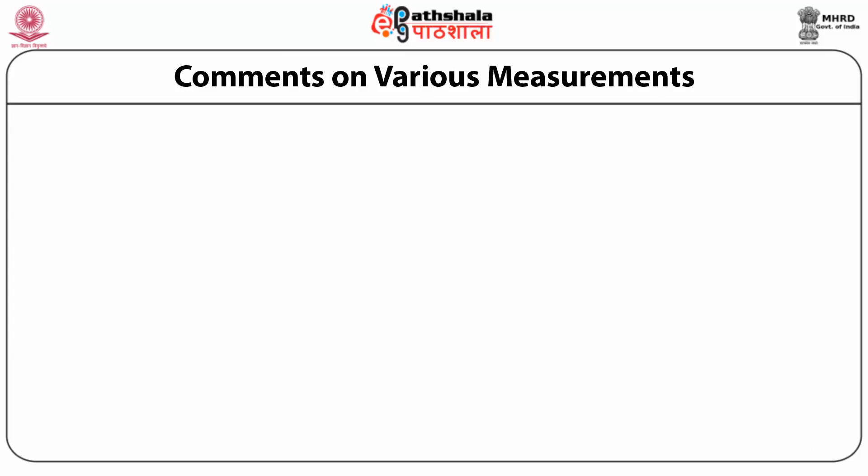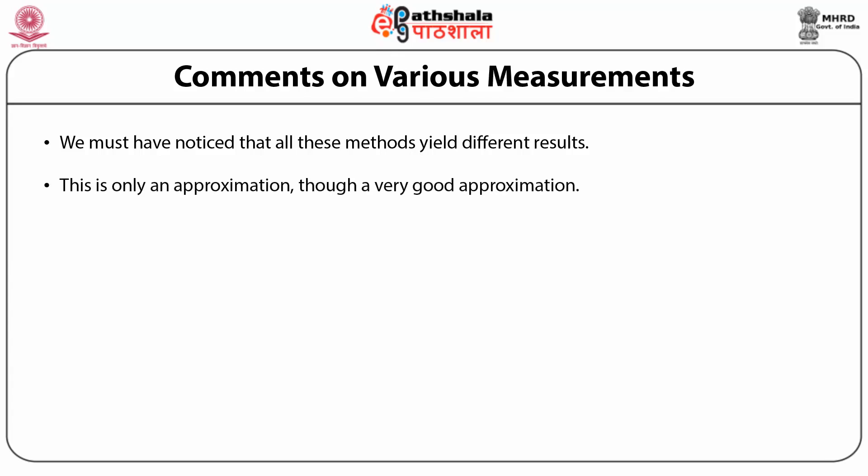Now let us comment on the various measurements. We have noticed that all these methods yield different results. The reason is that we assumed that the Sun radiates like a black body — this is only an approximation, though a very good one. If the Sun were in complete thermal equilibrium, it would radiate like a black body, and in that case the temperature would be uniform all over. However, it is not so.